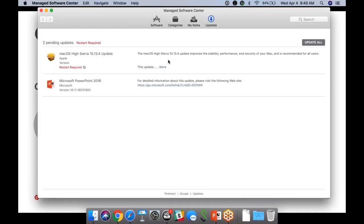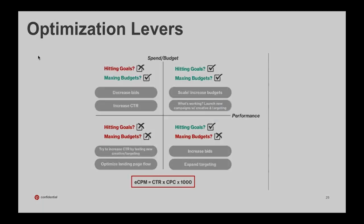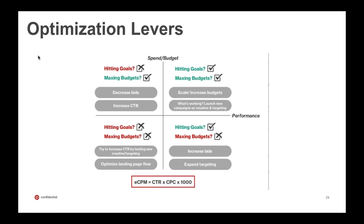Now for optimization — we've launched our ad campaign, things are running, we have good creative. This quadrant is really helpful for understanding how our auction works. The X-axis is how am I performing against my marketing goals; the Y-axis is are we spending all the money we'd like to spend. On the far left — not performing and not spending — we try to increase CTR and optimize with new landing pages and new targeting. Conversely, top right — you're hitting your goals and spending your $500 a day — you increase budgets to increase reach, or expand targeting and creative.